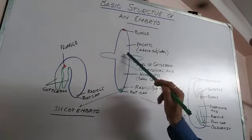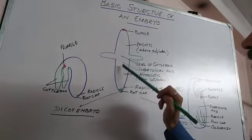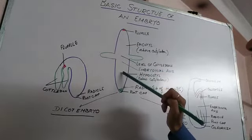This is the level of cotyledon. Above the level of cotyledon is epicotyl. Below the level of cotyledon is the hypocotyl.